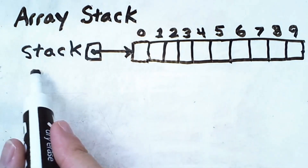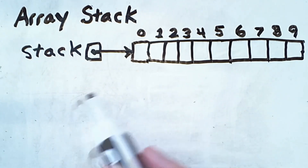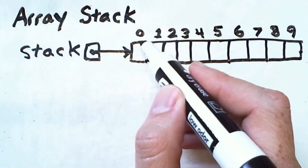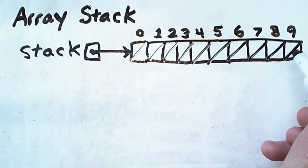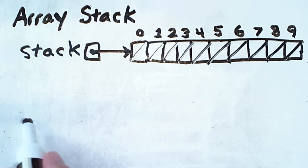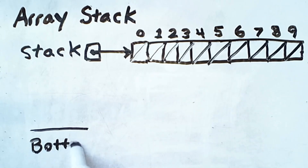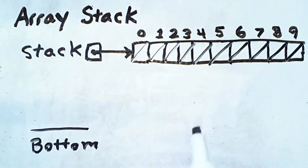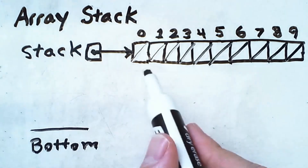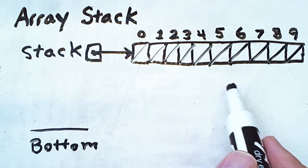We'll name this stack variable 'stack'. When we initialize a stack, it is empty. We represent this in the array by making every single cell contain a null reference, which is represented visually with these slash marks. Note that although the stack is empty, the array is not — we have to choose an array capacity in advance and reserve that space in memory. In this example, I've chosen a size of 10, meaning indices 0 through 9, but you can choose any arbitrary amount.